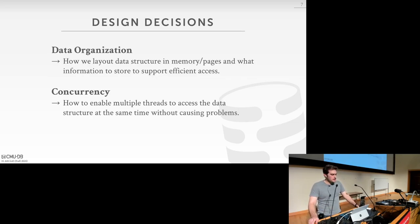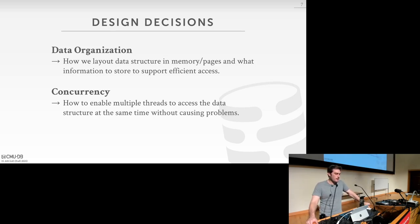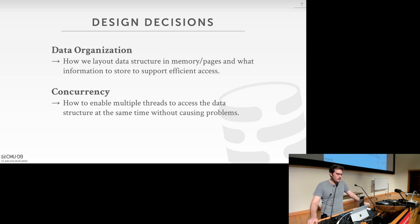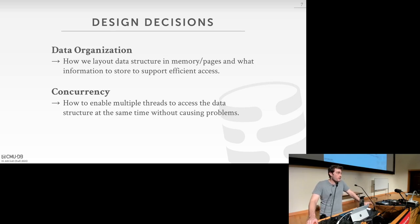The two key design decisions when designing data structures are: data organization — how is the data physically laid out and what are the trade-offs — and concurrency — how can you ensure data structures are accessed safely when multiple concurrent transactions or queries are running. We're going to focus first on the organization piece, assume everything is single-threaded for simplicity, and then talk about multi-threaded concurrency control in a later lecture.